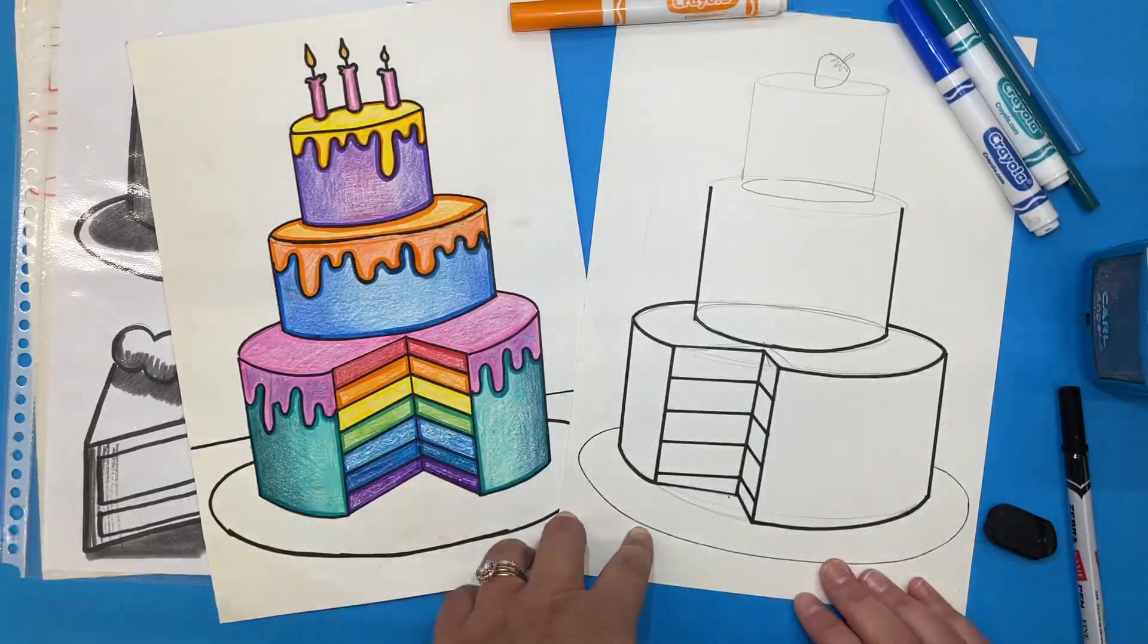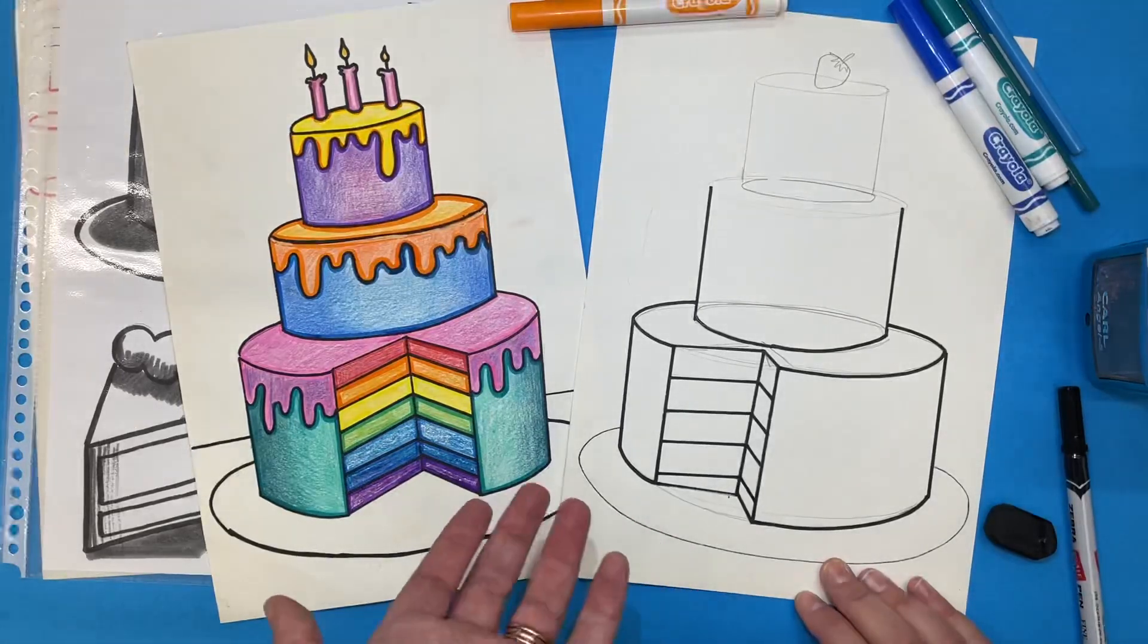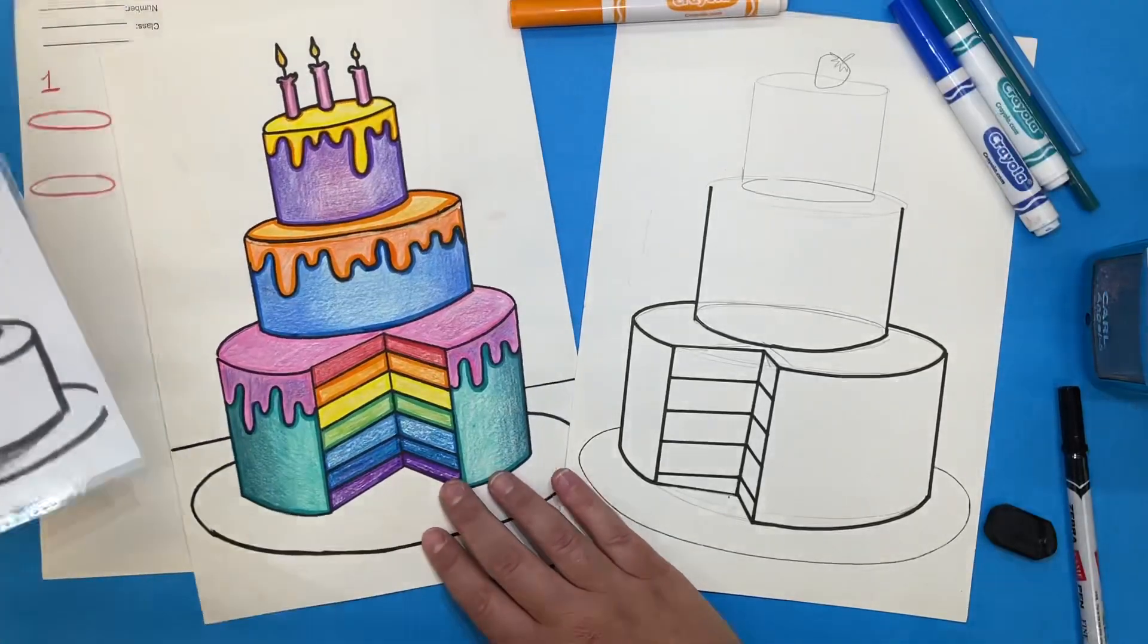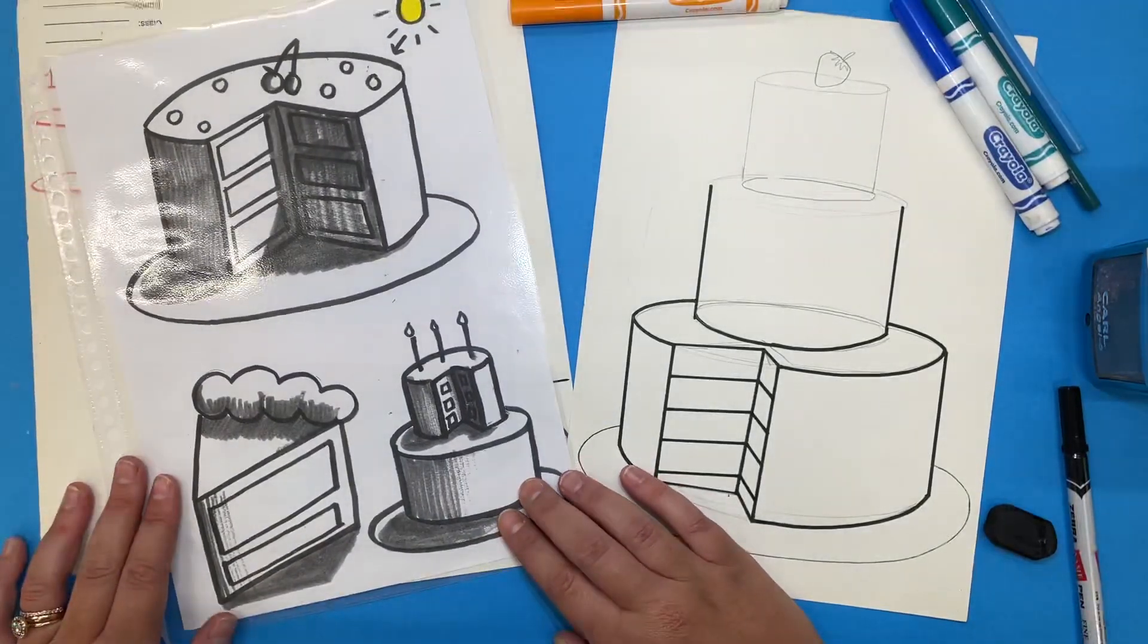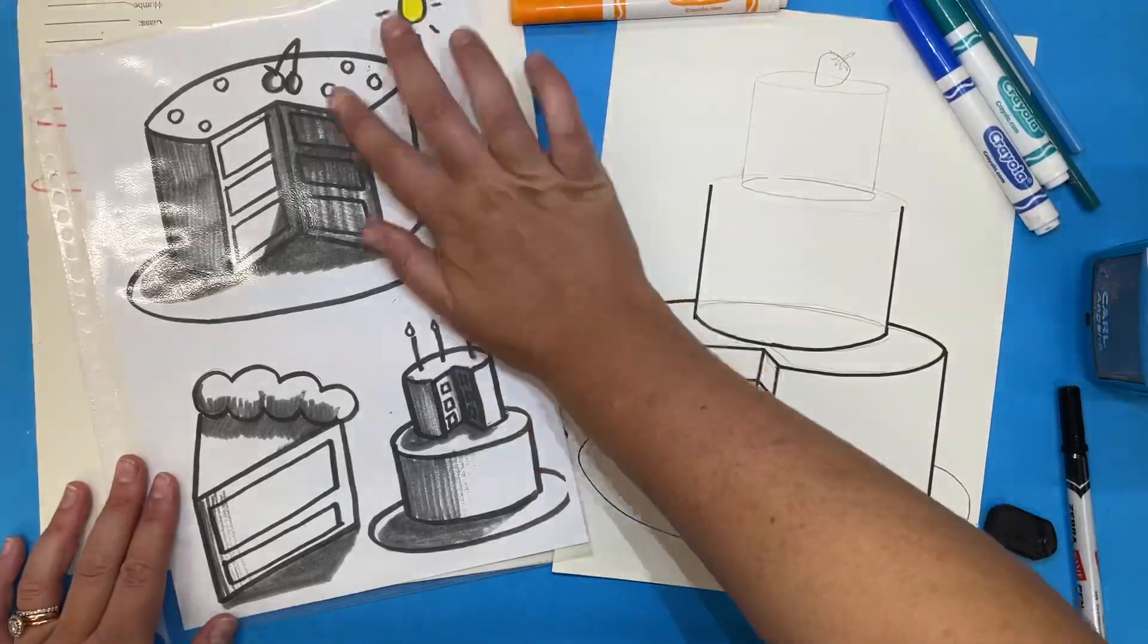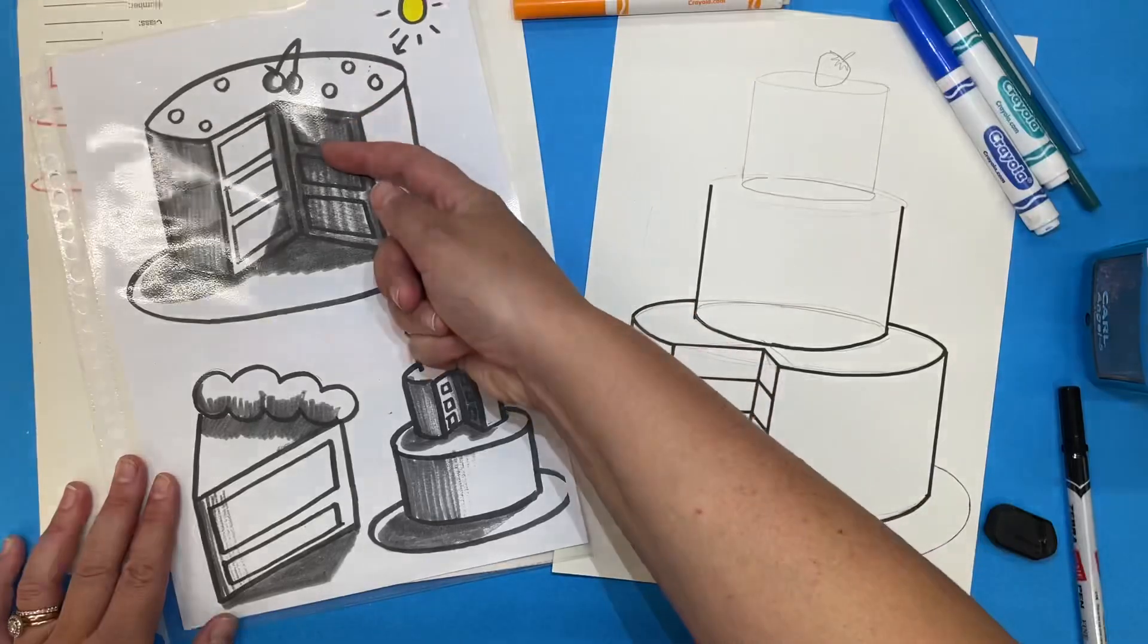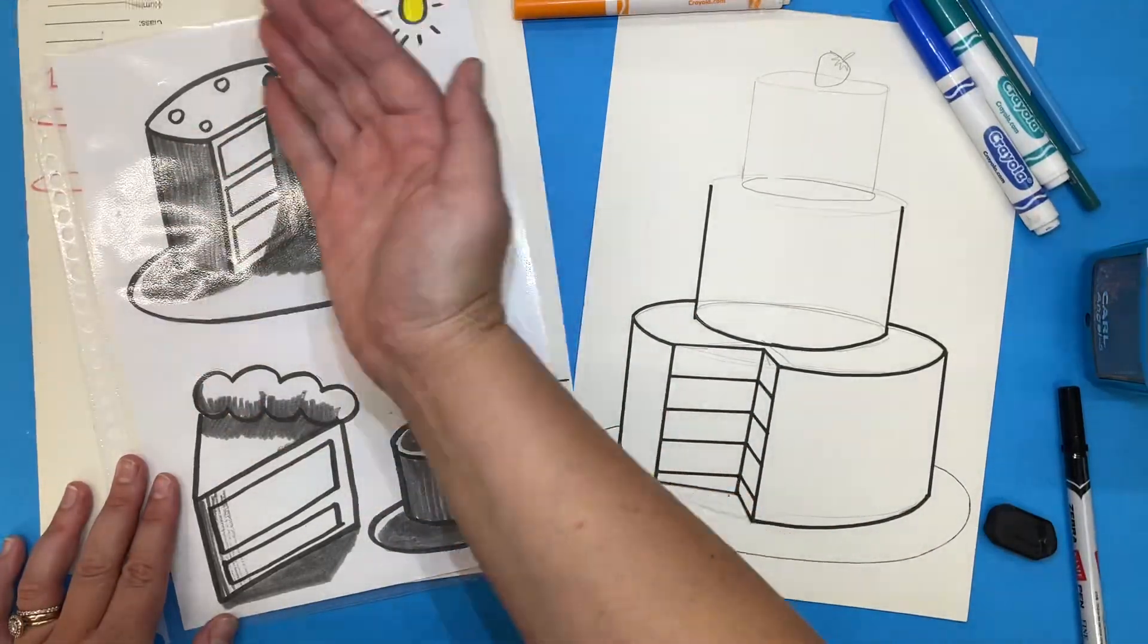We noticed in Wayne Thiebaud's art that he had lots of shadows. We are going to do the same today. At your table you'll see a little black and white diagram to help us understand how shadows work with a cylinder. When our light is coming from this direction it creates a shadow in places where the cake is on the back.